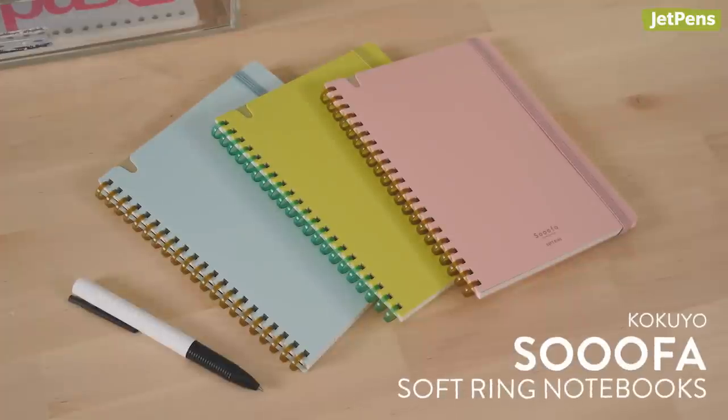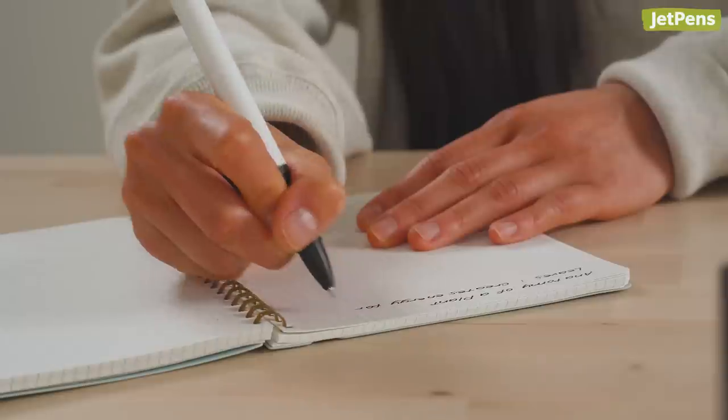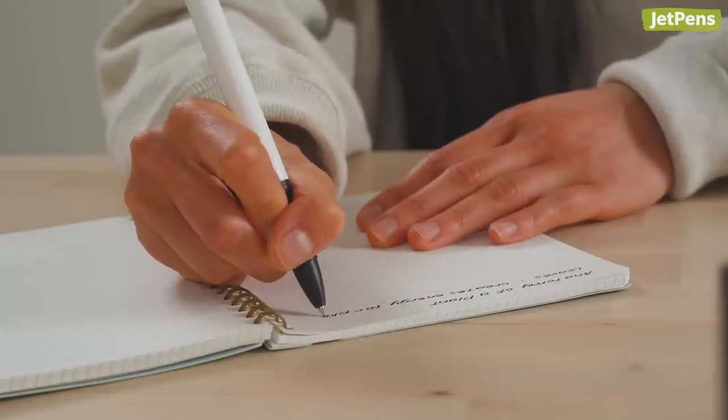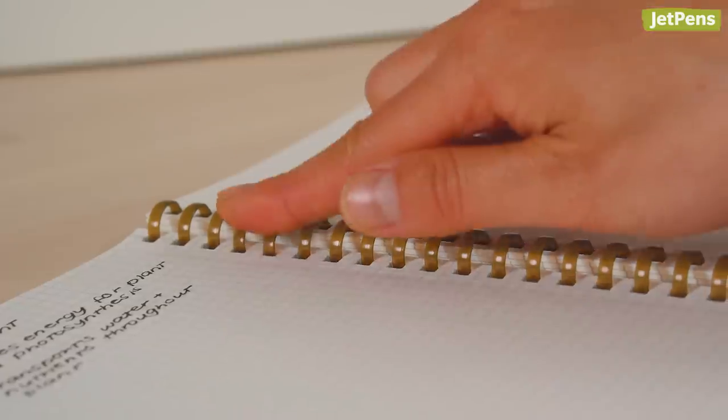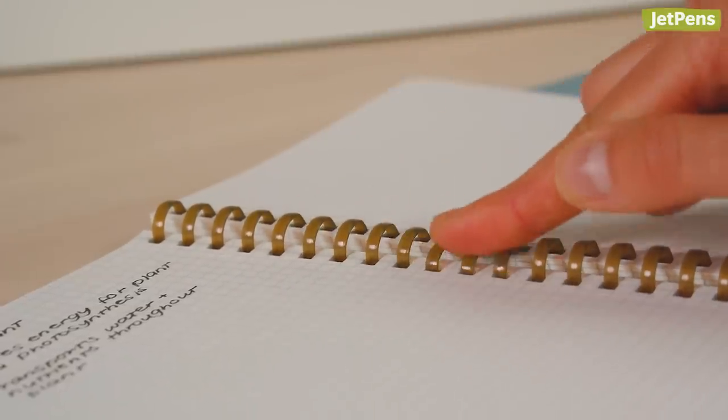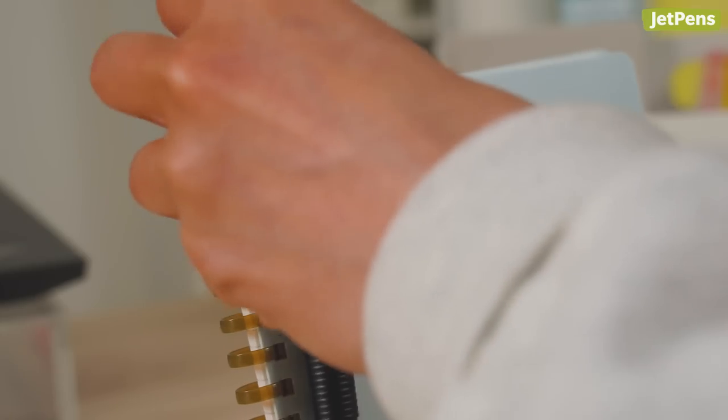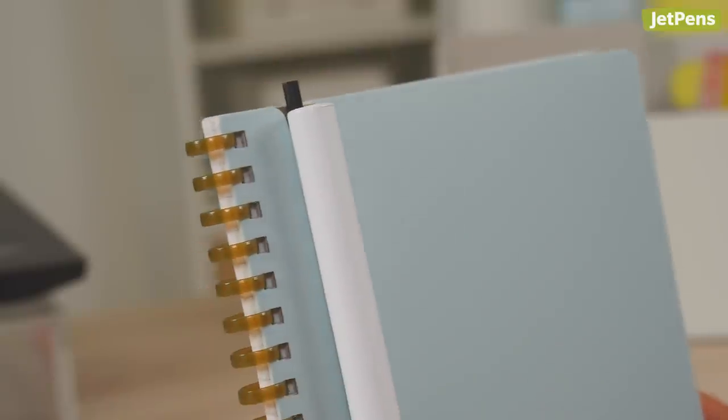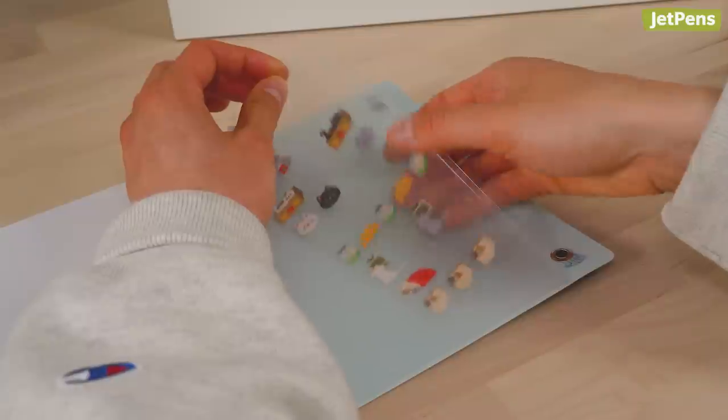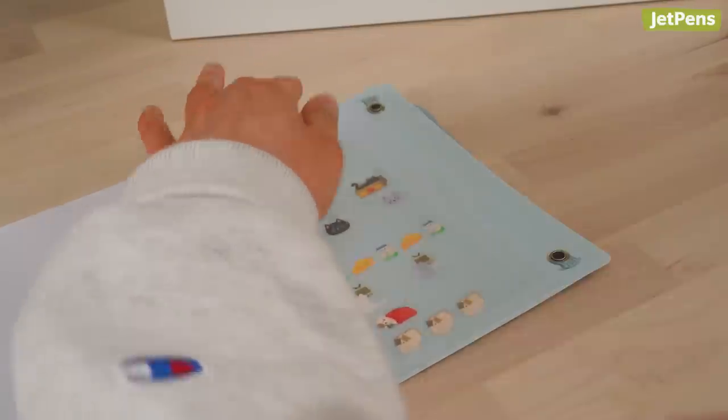Kokuyo Sufa Soft Ring Notebooks boast squishy plastic rings that won't dig into your arm or hand when you're writing. Unlike metal rings, they won't get bent out of shape or scratch other items in your bag. The front covers also offer notches for clipping pens to, and the inside back covers feature pockets for storing stickers or loose notes.